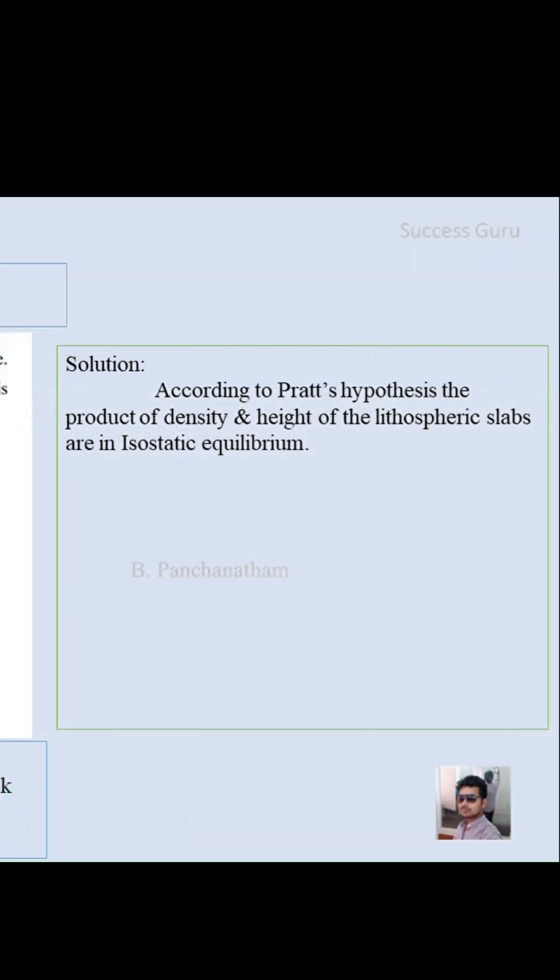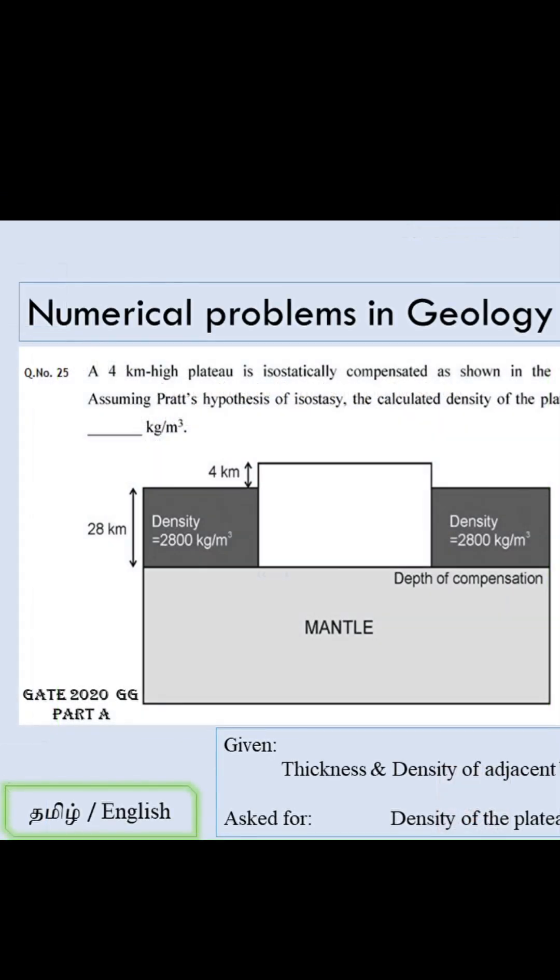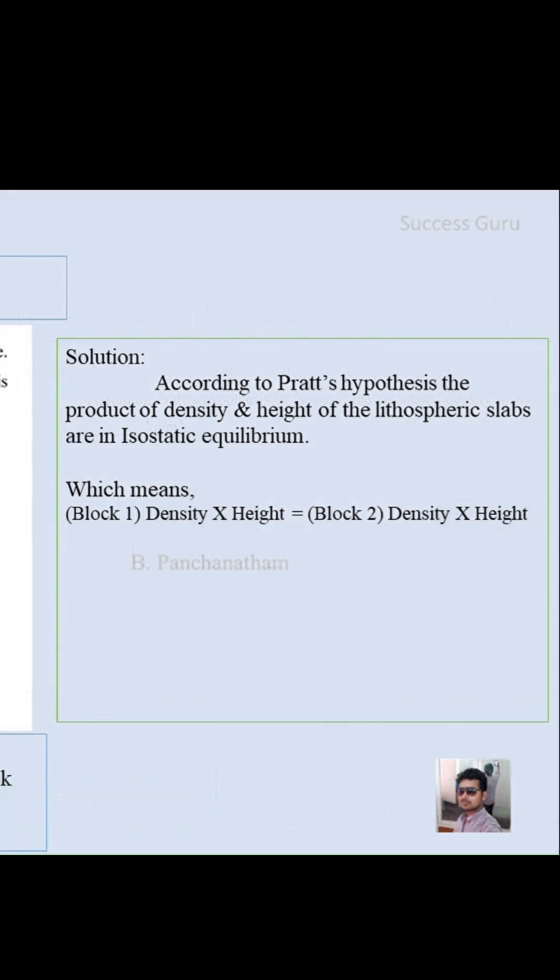According to the Pratt hypothesis, the product of the density and thickness of the lithosphere slabs are in isostatic equilibrium. You can see here block 1, you can consider this one as block 1. That is, density times height should be equal to block 2 density times height, so we can simply substitute the value.